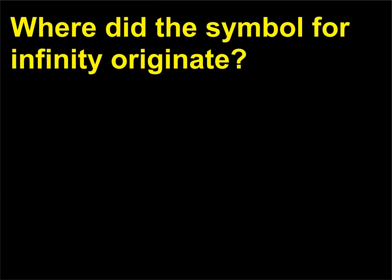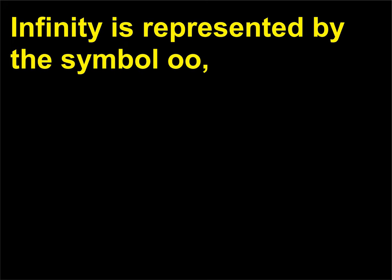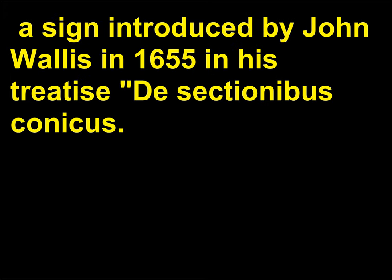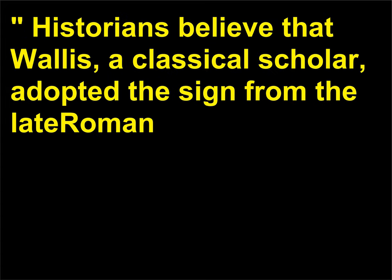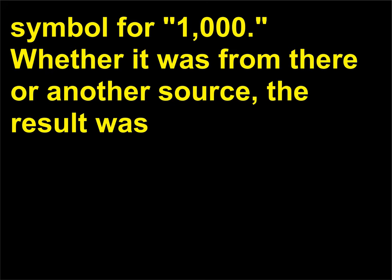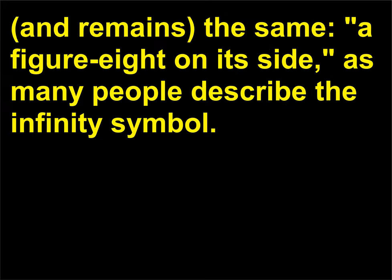Where did the symbol for infinity originate? Infinity is represented by the symbol ∞, a sign introduced by John Wallis in 1655 in his treatise De Sectionibus Conicus. Historians believe that Wallis, a classical scholar, adopted the sign from the late Roman symbol for 1,000. Whether it was from there or another source, the result was and remains the same: a figure 8 on its side, as many people describe the infinity symbol.